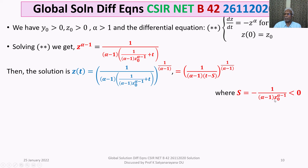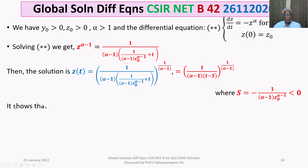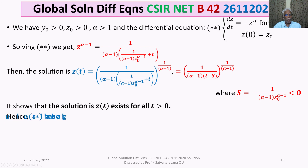Since S < 0, the solution z(t) would only be undefined at t = S, but S is negative. Therefore, for all t > 0, z(t) exists. This means the solution z(t) exists for all t > 0, so (**) has a global solution.